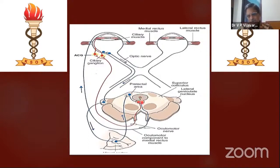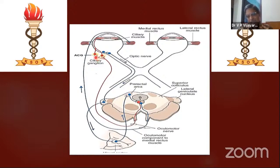This is called Parinaud's syndrome. From there, same Edinger-Westphal, same third nerve pathway. When it goes to the third nerve, the light reflex pathway enters 100 percent into the ciliary ganglion, whereas the accommodation pathway — only 80-90 percent enters the accessory ganglion and only 20 percent enters the ciliary ganglion. That is why when a ciliary ganglion problem exists, the light reflex may not work whereas accommodation may still work, since 80 percent bypasses it. This is also called light-near dissociation — seen in Adie's pupil.